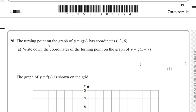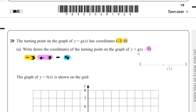Question 20, part A: The turning point of y = g(x) is at (-3, 6). Write down the coordinates of the turning point of y = g(x - 7). The transformation y = g(x - 7) is a translation by vector (7, 0), so the x-coordinate becomes -3 + 7 = 4, and the y-coordinate stays at 6. The turning point is (4, 6).